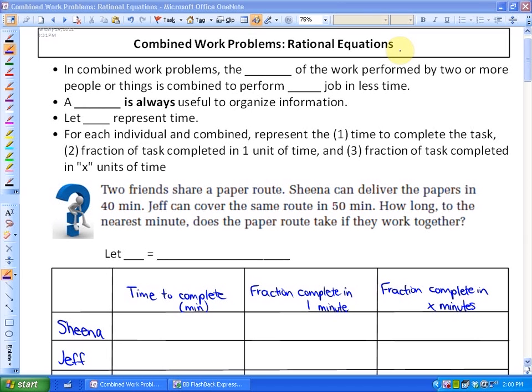In combined work problems, the sum of the work performed by two or more people or things is combined to perform one job in less time. It makes sense that if one of you takes so long to do something, that two of you could do it in less time, but not necessarily in half the time.